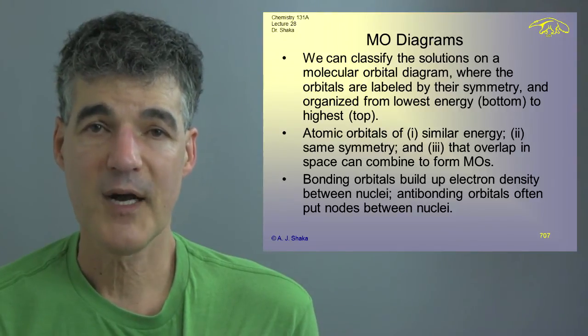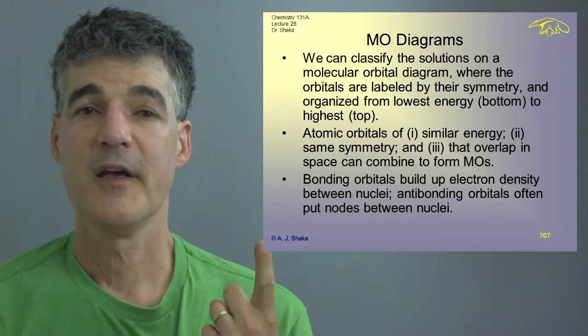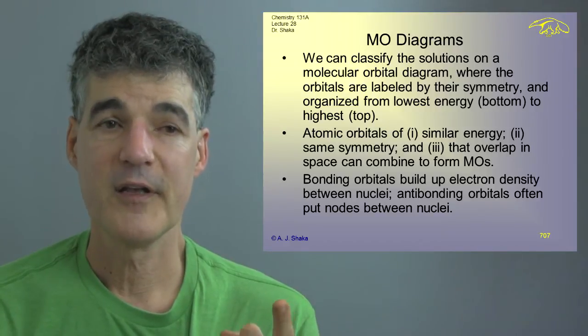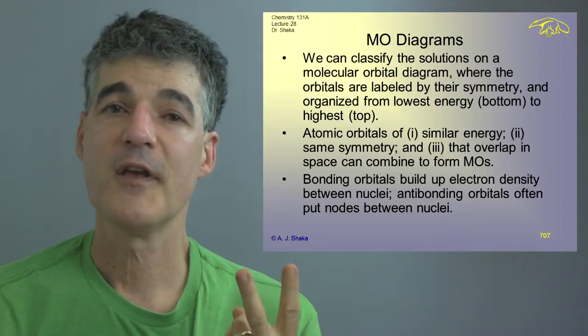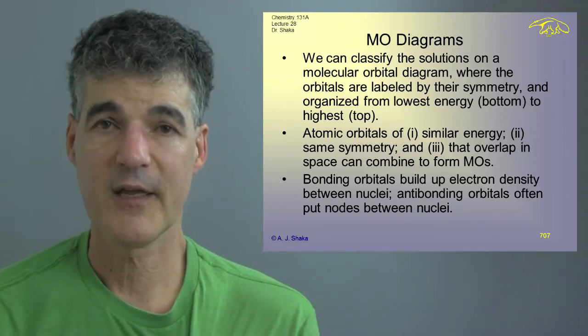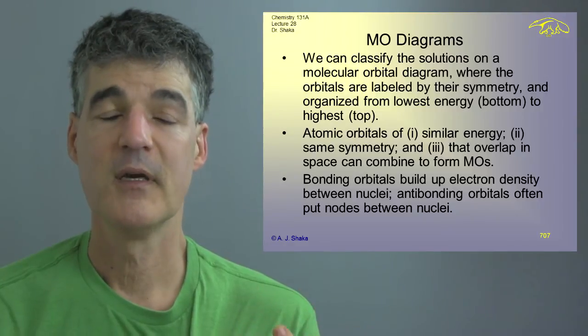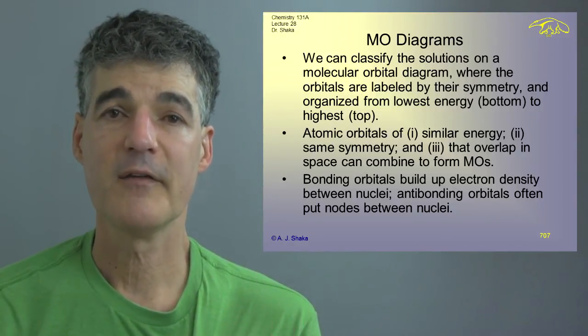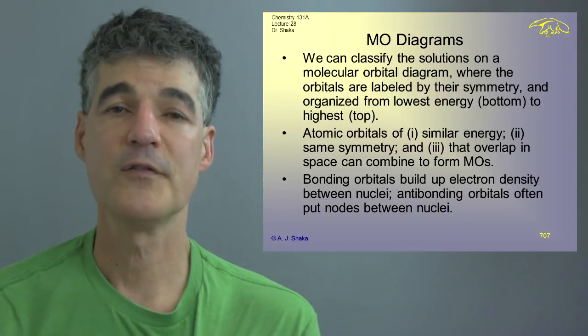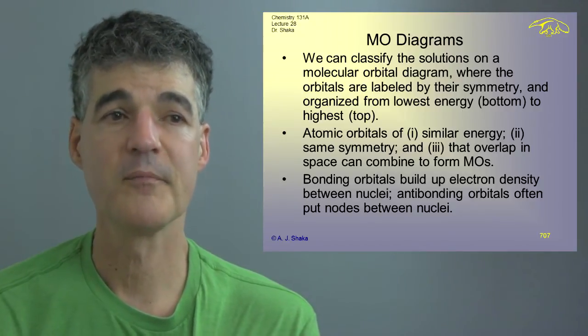Our rules for combining atomic orbitals were the following. They have to have similar energy. That's because they have to have similar de Broglie wavelength in order to interact. They have to have the same symmetry. And as I said, in a more advanced course, you'll understand exactly what that means when you study point groups. For now, just keep in mind that if one of them changes sign when you flip the molecule and the other one doesn't, those aren't going to interact. The integral is going to be zero identically.